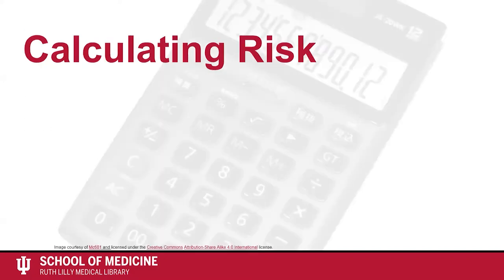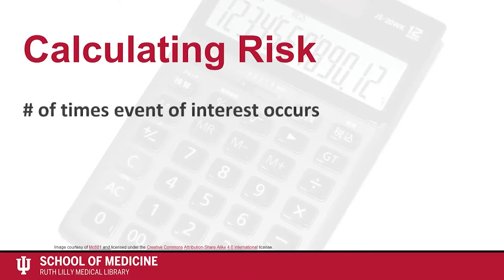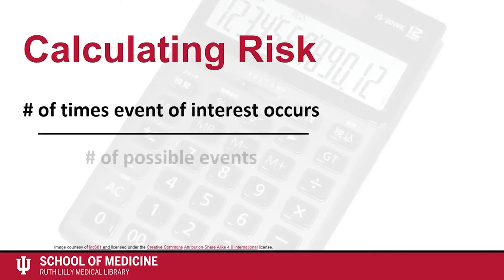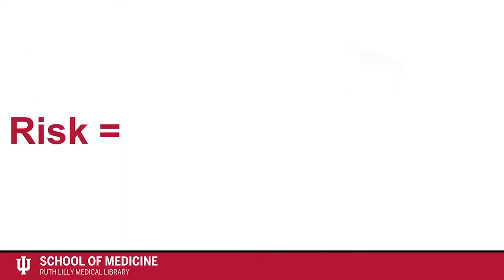Take a few moments to recall from the last video how to calculate risk. Risk is the number of times an event happens divided by the number of possible times an event could happen. It is important to know that in scholarly and in popular literature there are different ways of referring to risk.